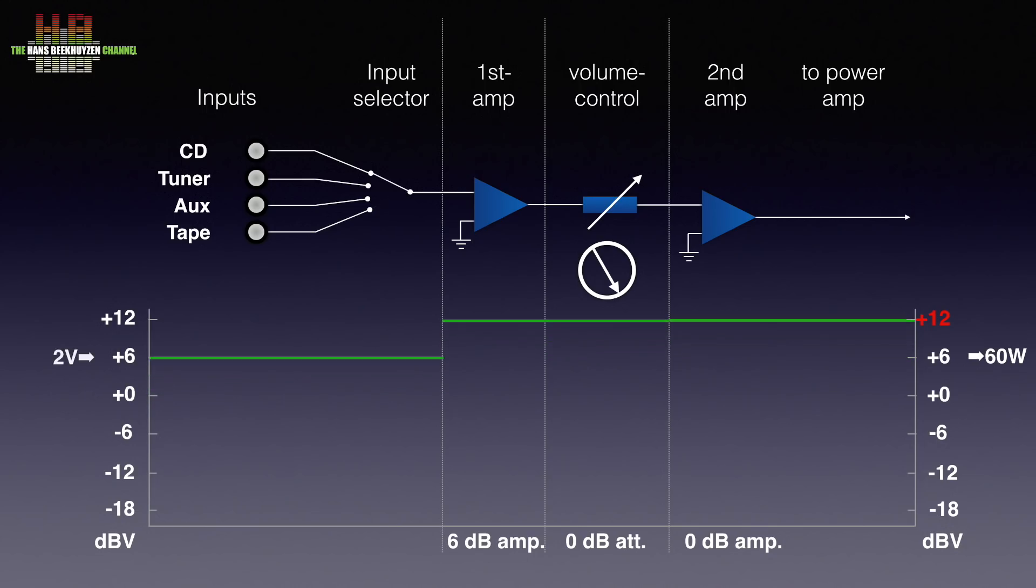But what happens when we switch back to the CD player? Due to the 6 dB gain we introduced in the first amplifier stage, the output voltage when using the CD player goes to plus 12 dBV, and that might be more than the power amp can handle. What we then have to do is turn back the volume knob so that it attenuates the signal by 6 dBs.